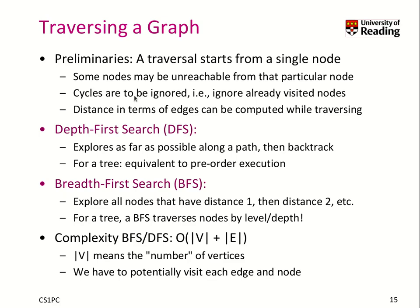Traversing a graph has various options. First of all we need to understand how the traversal works. Normally we start from a single node, and from that single node it may be that we have a couple of nodes that are unreachable from that particular node, because the graph may not be connected. We should also ignore cycles, which means we have to ignore already visited nodes.